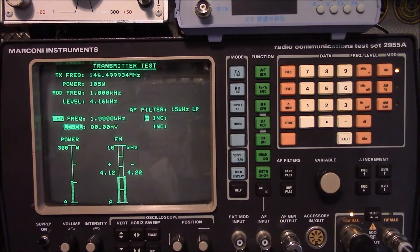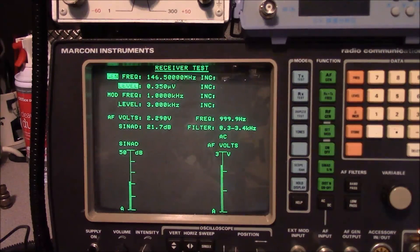And after our modification, this is the performance on transmit. In the amateur band, we're about 105, 106 watts. And our deviation level is 4.17 kHz. So, we're looking good on that end. Receiver performance is quite good too.